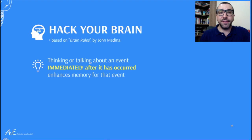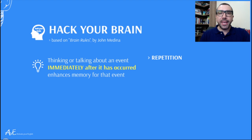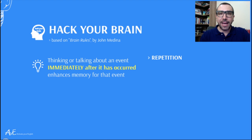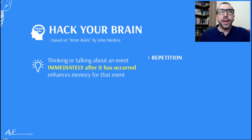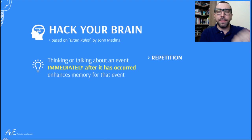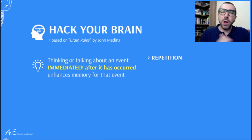The first rule: thinking or talking about an event immediately after it has occurred enhances memory for that event. It means that when we repeat what we have just learned and tell someone about something that just happened, we improve our memory in incredible ways. With spaced repetition — five minutes today, five minutes tomorrow — you're going to improve your memory by leaps and bounds.